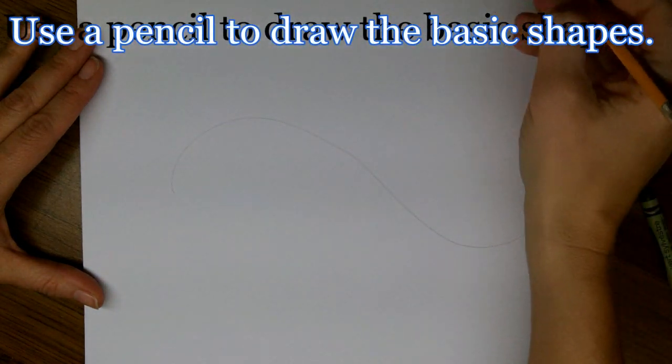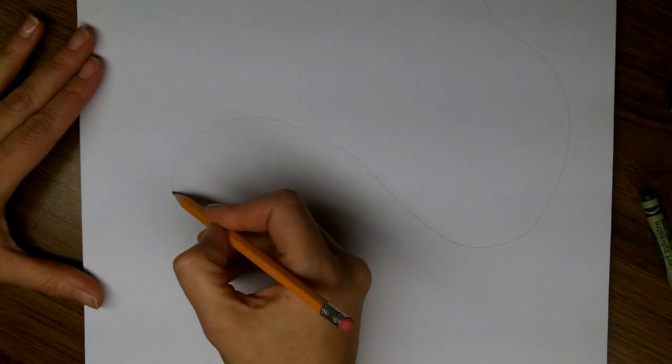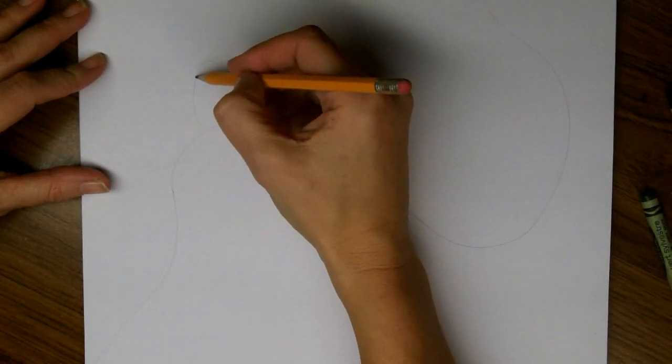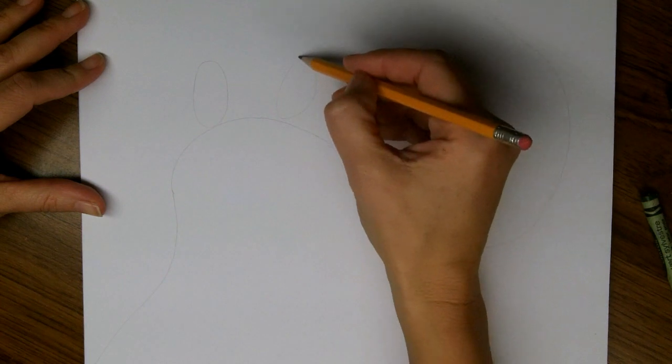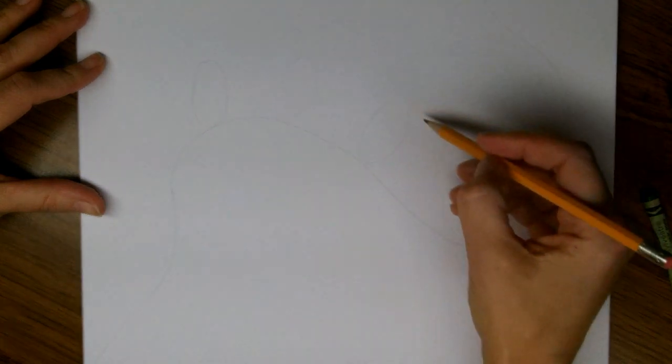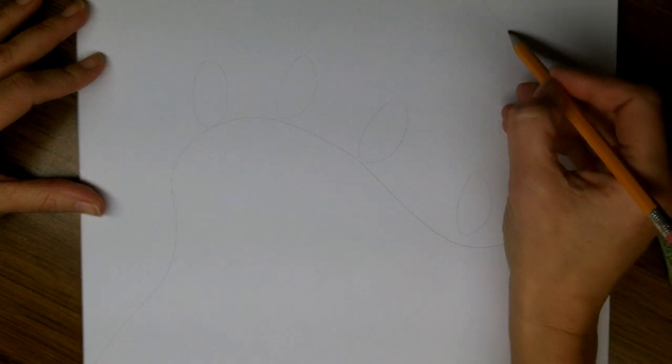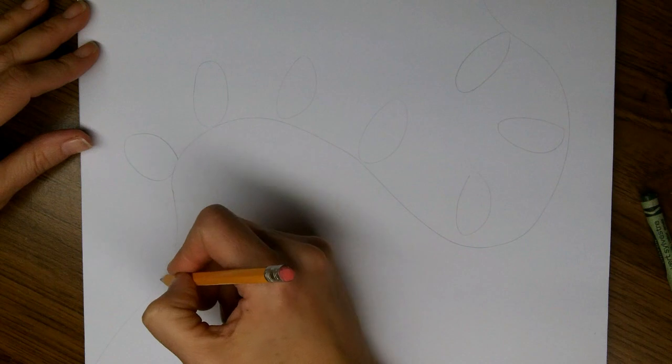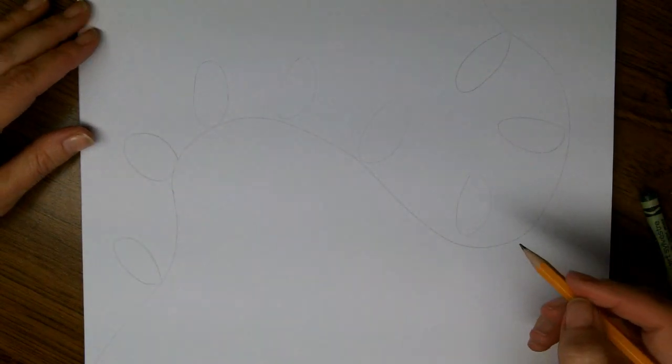We're going to start off by drawing the wire that the lights are on, and it can be any shape you like. And then we're going to draw ovals all along the wire, pointing out from the wire perpendicular. Try to make them evenly spaced.